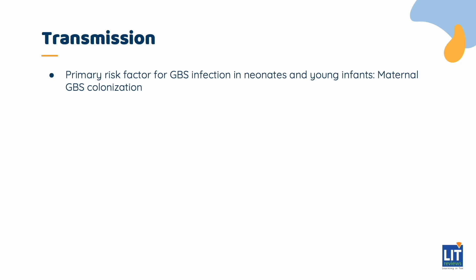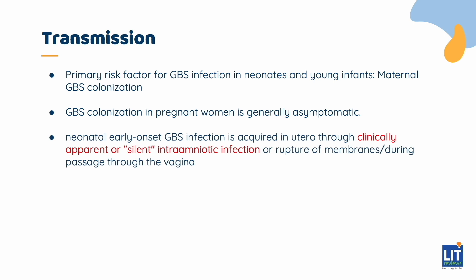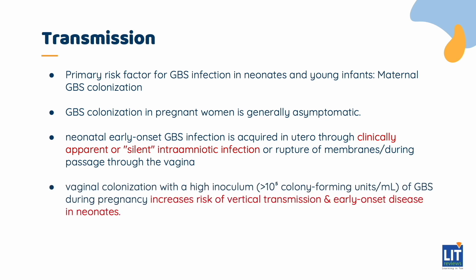GBS colonization is a primary risk factor for GBS infection in neonates and young infants. GBS colonization in pregnant women is generally asymptomatic. Neonatal early-onset GBS infection is acquired in utero through clinically apparent or silent intra-amniotic infection or rupture of membranes, as well as during passage through the vagina. Evidence suggests that vaginal colonization with a high inoculum of GBS during pregnancy increases the risk of vertical transmission and early-onset disease in neonates.